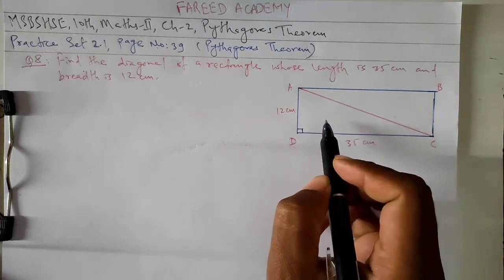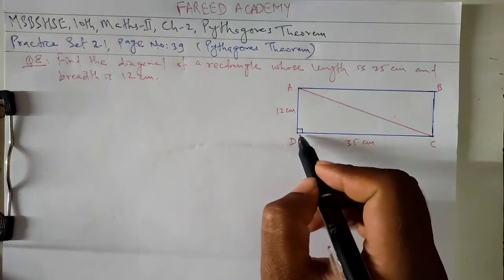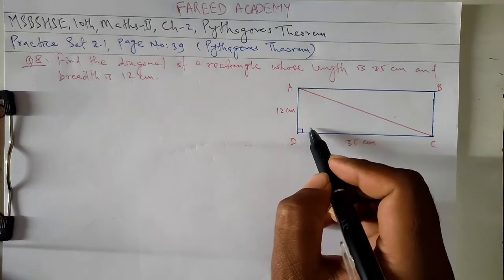By the property of a rectangle, all angles of a rectangle are 90 degree right angles.